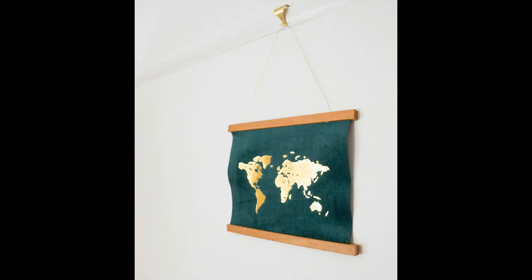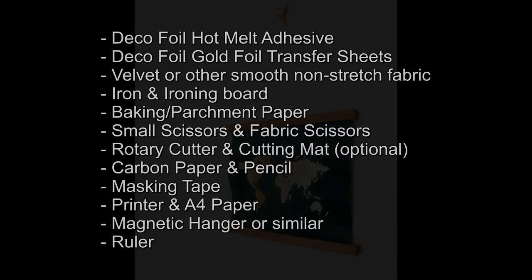In order to follow along, you're going to need some deco foil hot melt adhesive, some deco foil gold foil transfer sheets, some velvet or other smooth non-stretch fabric, an iron and an ironing board, some baking or parchment paper, some small scissors and some fabric scissors or a rotary cutter and cutting mat, carbon paper and a pencil, masking tape, a printer and a sheet of A4 paper, a magnetic hanger or other method of display, and a ruler. Also, if you have a cutting machine like a Silhouette or a Cricut, you can always use that to cut out the world map.